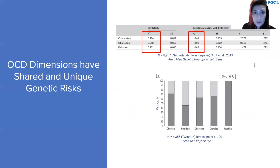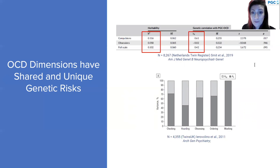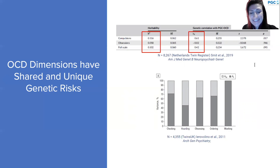A slightly older twin study looking at symptom dimensions in the more typical factor structure broke down genetic variants for each dimension into shared versus unique variants. There is definitely genetic variance unique to most symptom dimensions in OCD, but there is also a large proportion of shared variants across OCD dimensions. Hoarding appears to be a seeming outlier, with growing evidence that it may have a slightly different genetic architecture, supporting its separation into its own disorder in the DSM. The PGC-OCD group is conducting large-scale GWAS of hoarding.